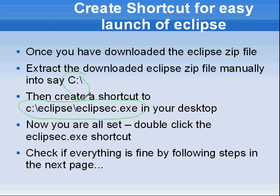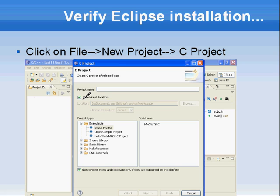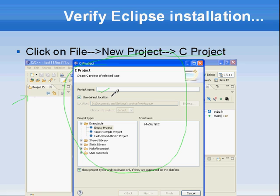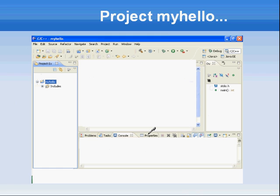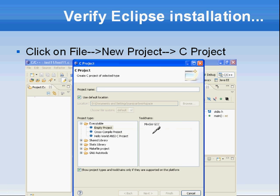At any point feel free to pause and do the necessary installation. Once you double-click on the shortcut it will launch the CDT environment. Go ahead and click File, New Project, and C Project — you will get a dialog box. You will also see the tool chains that have been installed and detected automatically. Since we have already installed MingW, it is now able to locate it, so select the MingW tool chain.